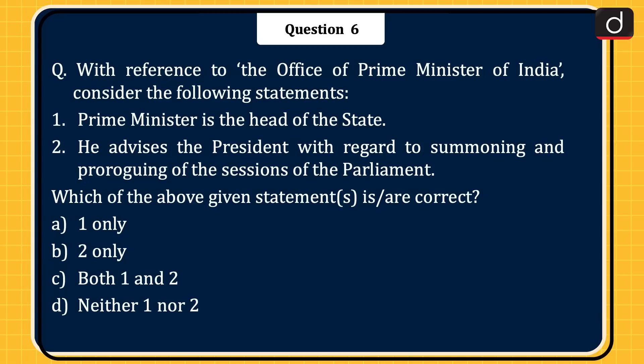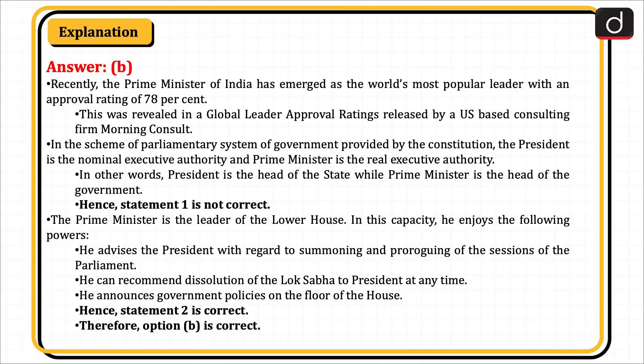Next question: with reference to the Office of Prime Minister of India, consider the following statements. Statement 1: Prime Minister is the head of the state. Statement 2: He advises the President with regard to summoning and proroguing of the sessions of the Parliament. Which statement(s) is/are correct? Options: 1 only, 2 only, both 1 and 2, or neither 1 nor 2? The correct answer is option B, 2 only. Recently, the Prime Minister of India has emerged as the world's most popular leader with an approval rating of 78%, revealed in global leader approval ratings by US-based consulting firm Morning Consult.